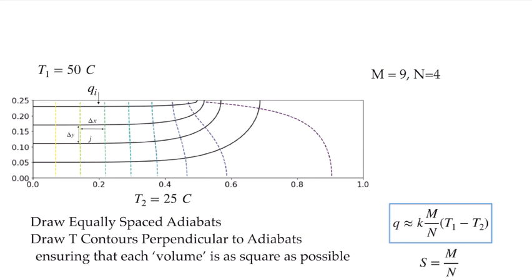Comparing this to the expression for a shape factor — where the heat rate equals the shape factor times the temperature difference — the shape factor obtained from this method is simply m over n.